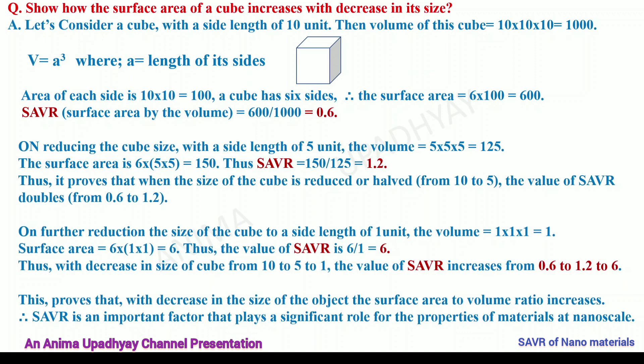On reducing the cube to a side length of 5 units — half of 10 — the SAVR comes out to be 1.2, which is double the value obtained with side length 10. On further reduction to a side length of 1 unit, the SAVR equals 6. This indicates that with decrease in size of the cube from 10 to 5 to 1, the SAVR increases from 0.6 to 1.2 to 6. It proves that SAVR is an important factor playing a significant role in the properties of materials at nanoscale.